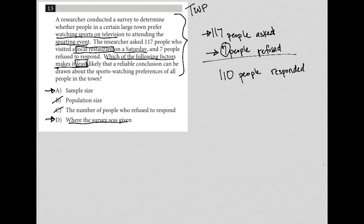So I would have to say that it has to be where the survey was given, right? The question is asking about the sports watching preferences of all people in town, of everyone. And the only people you're approaching, no matter how many people there are, if there were a thousand people at that restaurant, you're only approaching people who happen to be at this restaurant on a Saturday, and these people by no means can speak for the entire town.